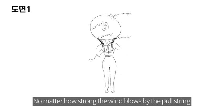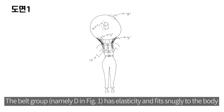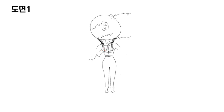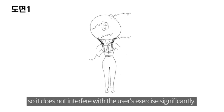No matter how strong the wind blows by the pull string, namely E in figure 1, the circular shade plate does not incline significantly. The belt group, namely D in figure 1, has elasticity and fits snugly to the body, so the fit of exercise equipment is good. The exercise equipment is light and comfortable, so it does not interfere with the user's exercise significantly.